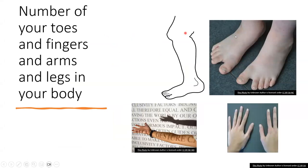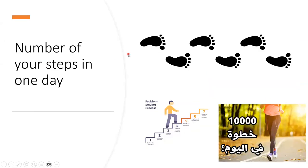Number of your toes, fingers, arms, and legs. How many toes have you got? I have got 10 toes, 10 fingers, 2 arms, and 2 legs. The number of your steps in one day — these are your steps. If you want to go to school or go anywhere, these are your steps. They say you must take 10,000 steps in a day.